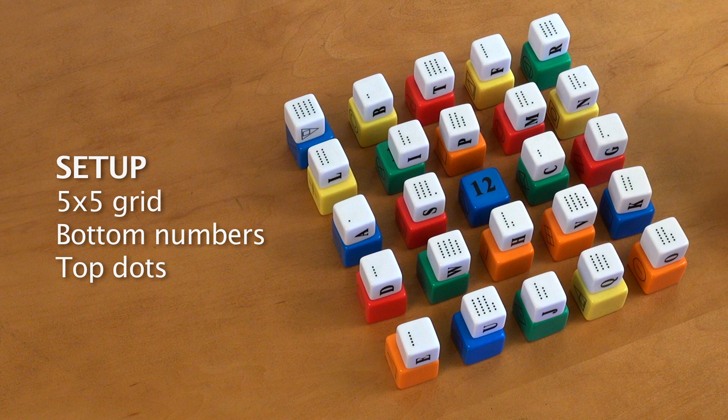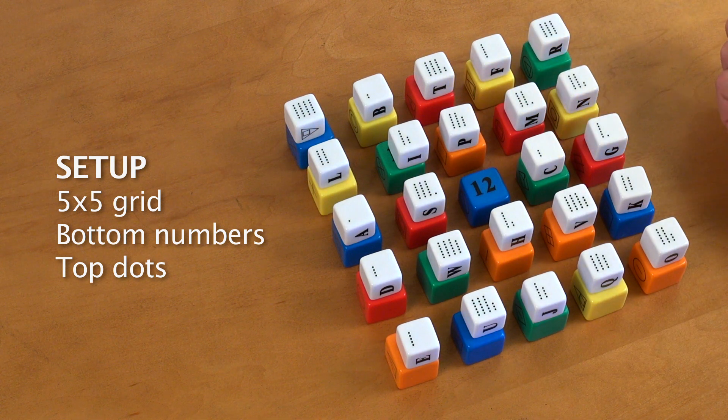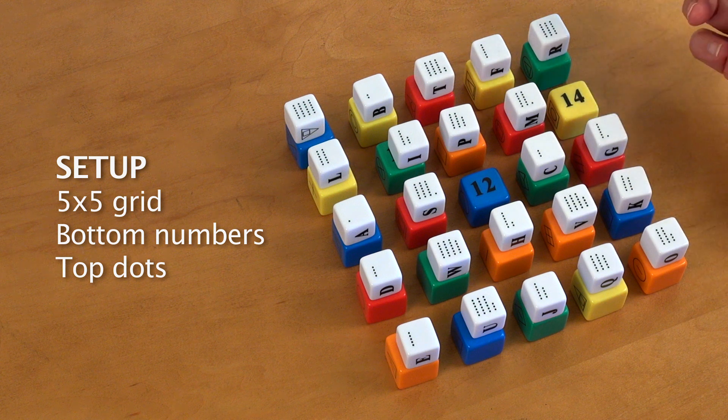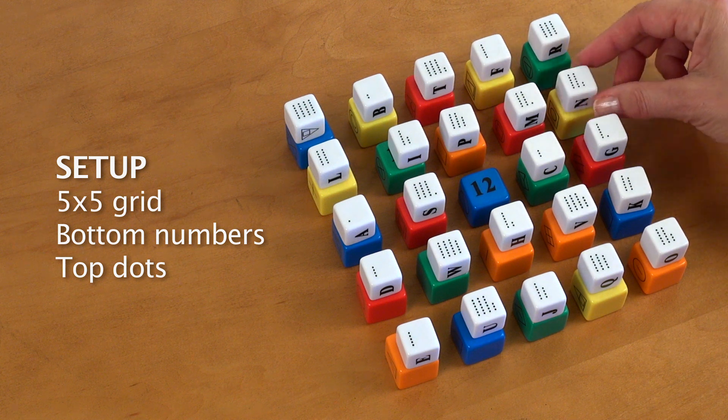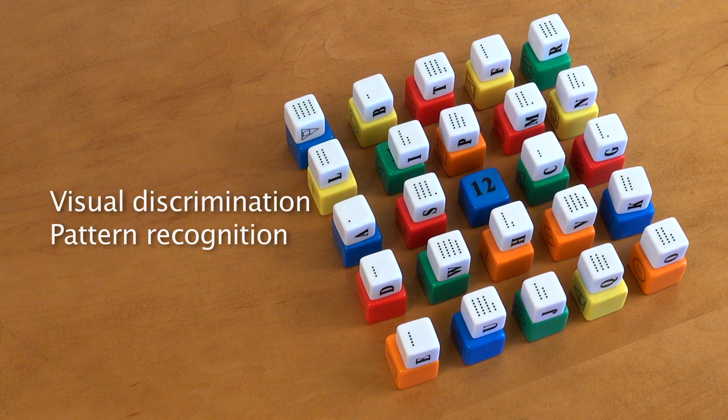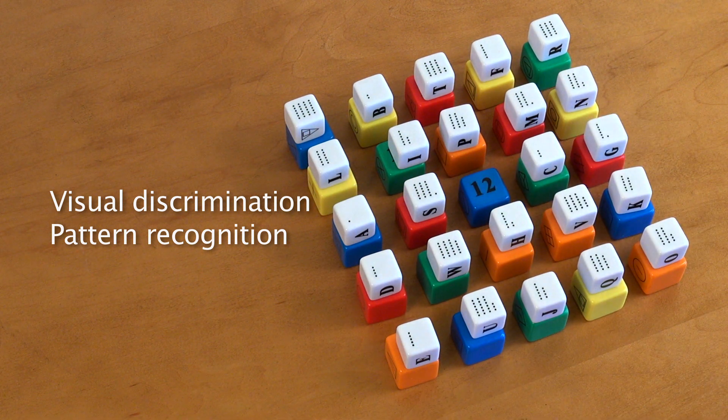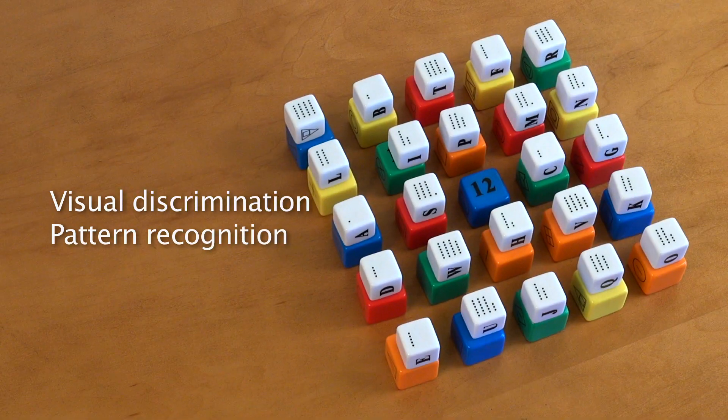I've got a five by five grid today, the easiest setup to help me out, and I'm using the dots on top and the numbers on bottom. I'll admit the dots are a real challenge for me. You have to have great visual discrimination to start to immediately recognize the number of dots on a dice, and it's about pattern recognition.